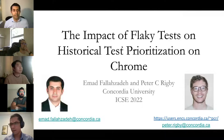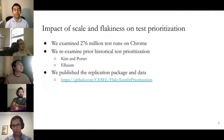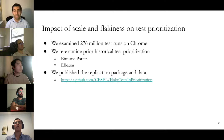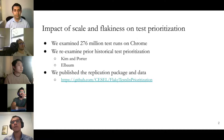Hello everybody, my name is Emad and I will present the impact of flaky tests on historical test prioritization on Chrome, work done with my supervisor Dr. Ricky. We wanted to understand how test prioritization algorithms perform on large-scale projects in the presence of flakiness. We examined 276 million test runs on Chrome, capturing all test results from the Chrome website, and re-examined prior historical test prioritization algorithms like HUMN, PARTER, and ALBUM. The dataset is valuable as it is one of the rare large-scale datasets with flaky flags.